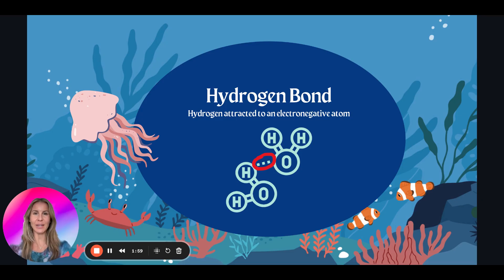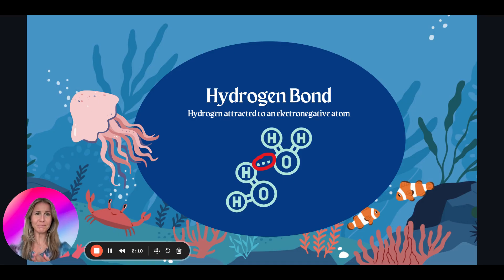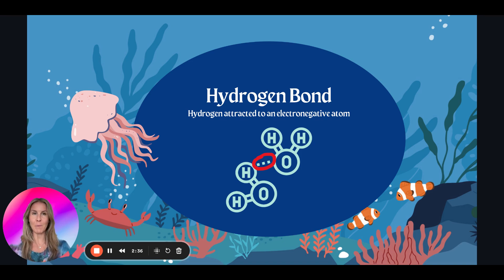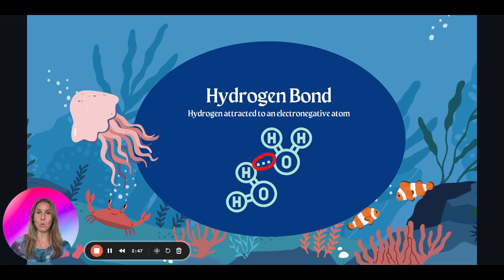Hydrogen bonds are going to attract one couple to another. So now we have two or more water molecules. Hydrogen bonds are actually usually weak — strong enough to hold together, but pretty weak, which means they can break, and that's what allows water to boil. The hydrogen will attract to an electronegative atom — in this case, oxygen. Electronegative means they like to pull electrons a little closer. So with a hydrogen bond, we have two or more water molecules attracting to each other and forming a bond.